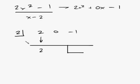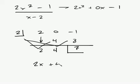Bring down the 2. 2 times 2 is 4. 0 and 4 is just 4. 2 times 4 is 8. 8 and negative 1 is 7. So, my answer is going to be 1 degree less. So, it's going to be 2x plus 4 plus 7 over x minus 2.